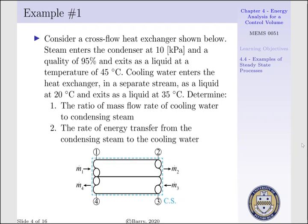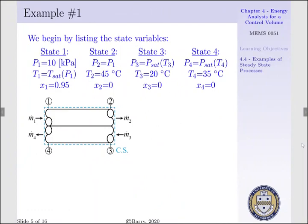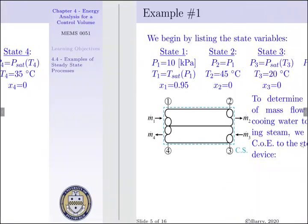To begin, we draw our control surface over the entire heat exchange system, such that M.1 and M.3 enter our control volume, and M.2 and M.4 exit our control volume. We list our state variables: state 1 is steam entering at 10 kPa with a quality of 95%. At state 2, liquid exits at 45 degrees centigrade — the pressure between state 1 and state 2 remains the same, as a heat exchange system operates under constant pressure. At state 3, liquid water enters at 20 degrees centigrade, and at state 4, liquid water exits at 35 degrees centigrade. The pressures between state 3 and state 4 also remain the same.